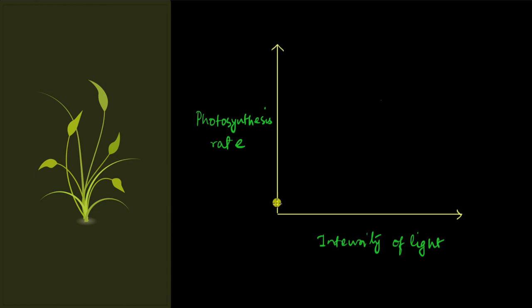Now, what would you expect? You would expect that when there is no intensity of light, the photosynthesis rate is zero. And then as it increases, the photosynthesis rate increases, right? Like this. And then you would expect as the intensity of light goes on increasing, the photosynthesis rate also goes on increasing.